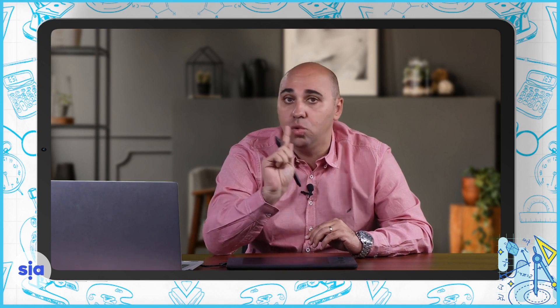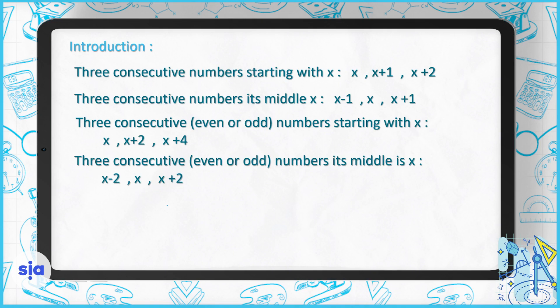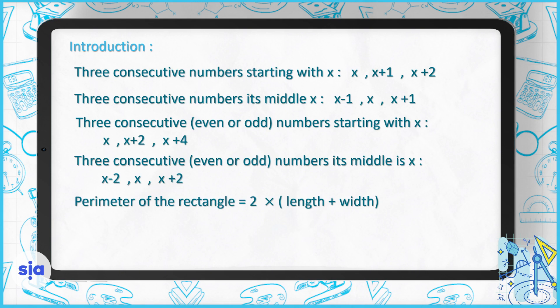For example, three consecutive odd numbers after each other: three, five, seven. What happens to three to become five? We add two. So the first number is X, the next is X plus two — take care, it's not two X, it's X plus two because we add — then X plus four. For the three consecutive odd or even integers when the middle number is X: the one after is X plus two and the one before is X minus two. Remember that the perimeter of a rectangle is two multiplied by the length plus the width, and the area of the rectangle is the length times the width.